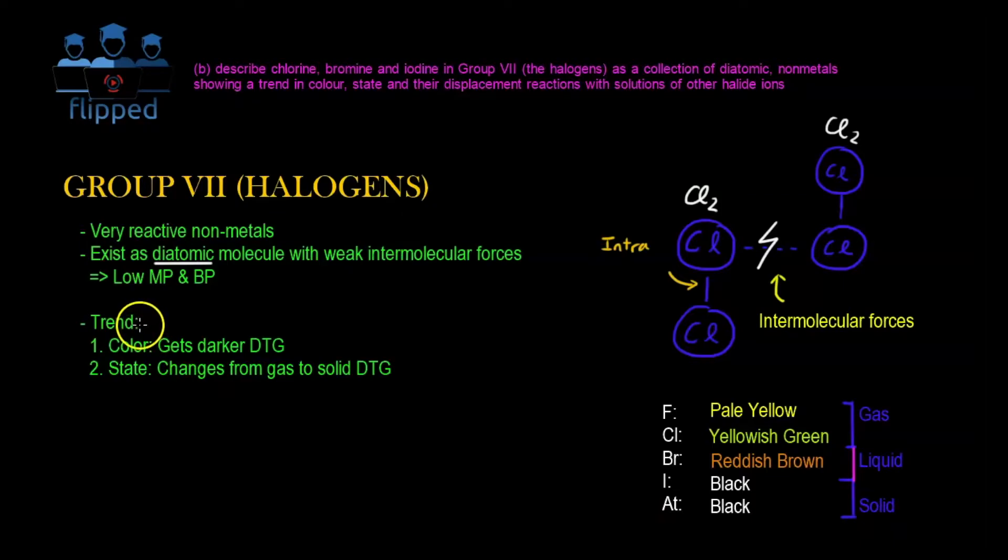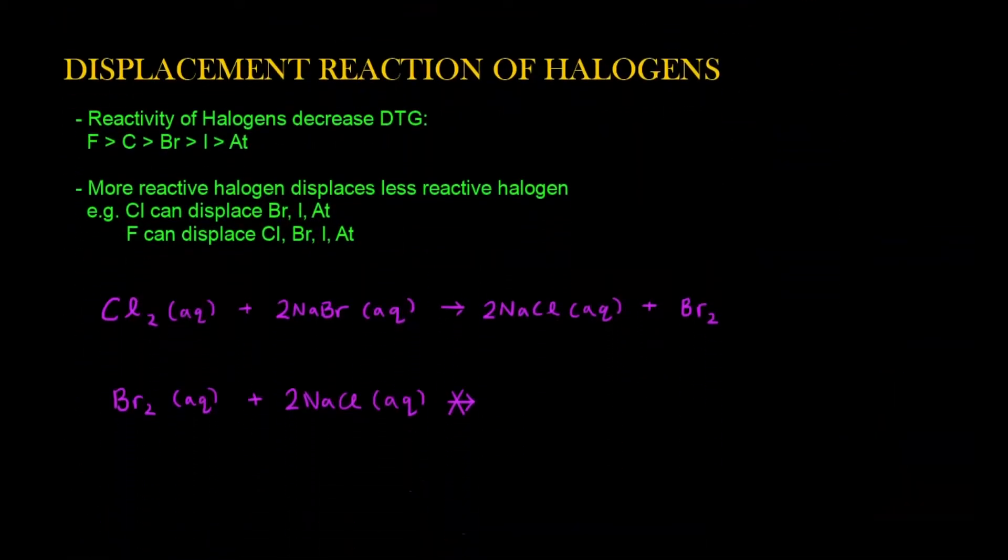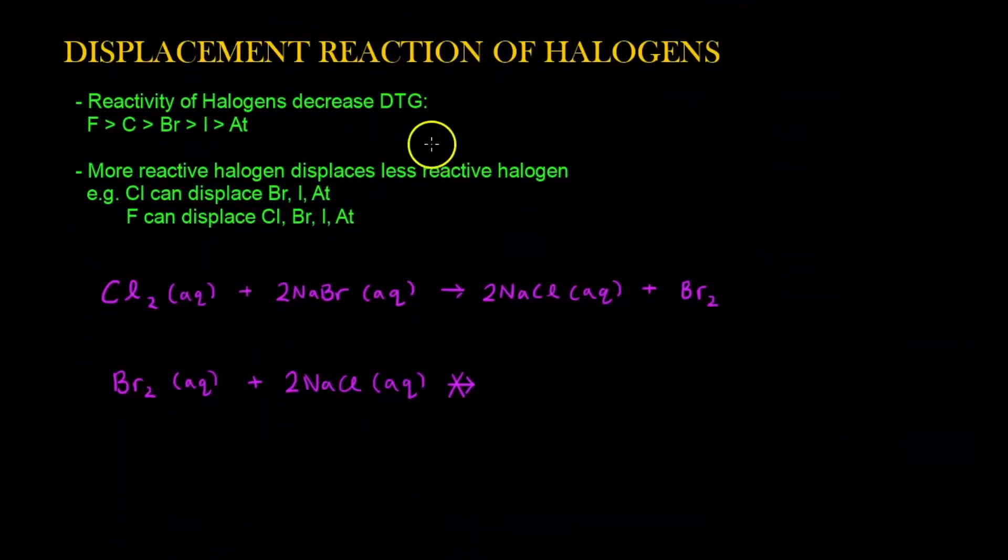Every group has its own trend. In the case of halogen, you have to know in terms of color and the state. Let's move on to the second part of halogen, which is displacement reactions of halogens.